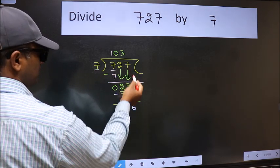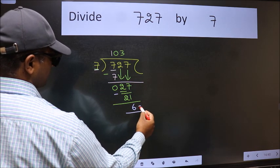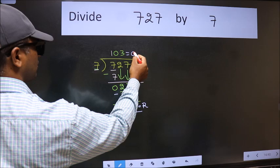No more numbers to bring it down. So we stop here. This is our remainder and this is our quotient.